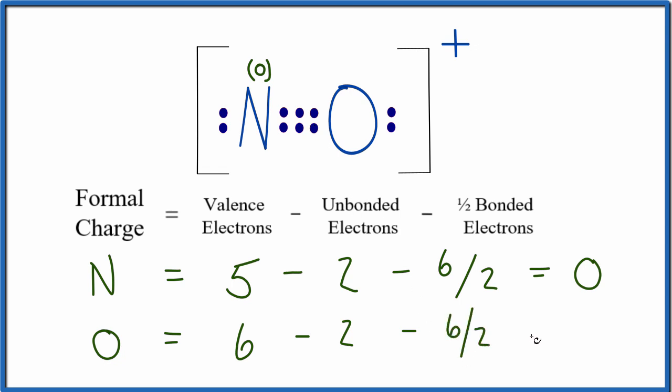and divide them by two. And then we have six minus two is four, four minus three. That gives us a plus one formal charge on the oxygen. So we'll put our plus one there.